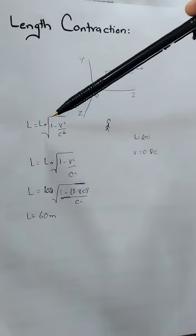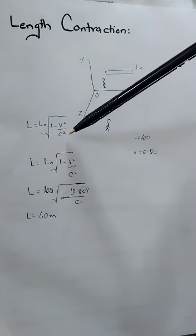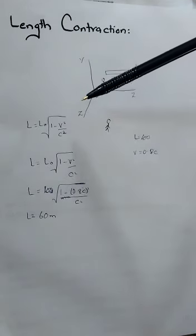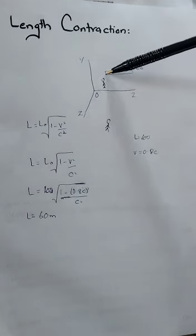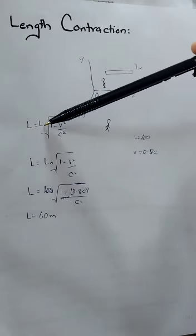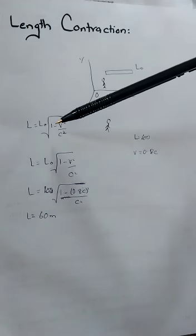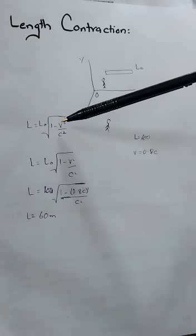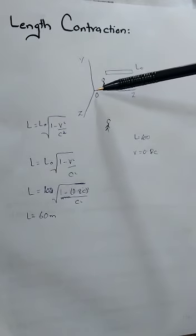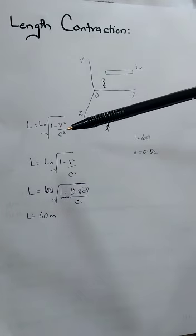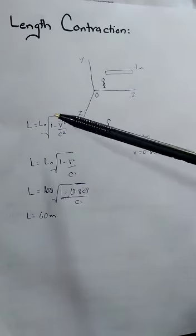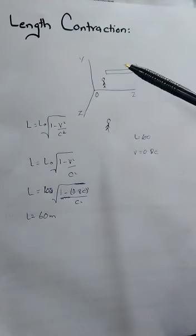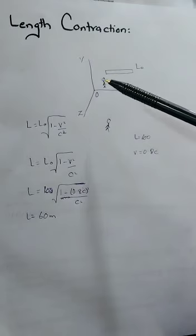The new length L is given by L0 multiplied by the square root of (1 minus V squared divided by C squared). Here V is the speed with which the rod or its frame of reference is moving, C is the speed of light, and L0 is the actual length of the rod measured by an observer with respect to which the rod is stationary.